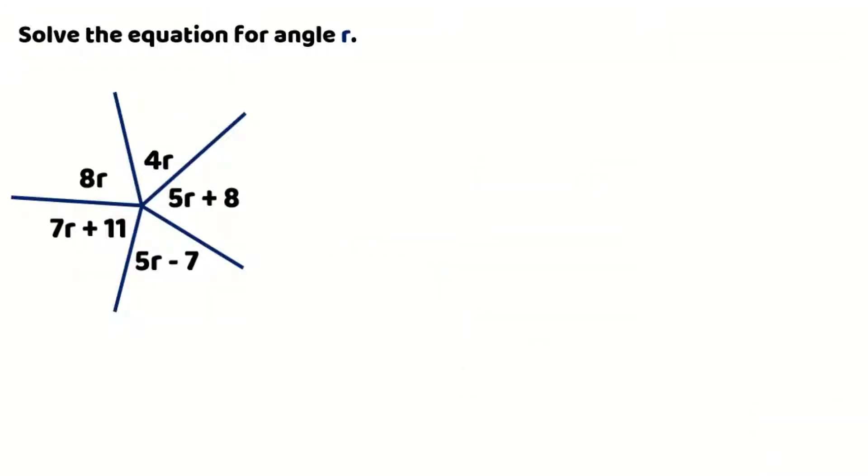We're going to begin solving our equation the way we did in our first example, remembering that all of the components in our diagram sum to 360 degrees. So we're going to begin by writing out our equation first, and then we'll move on to our next step where we're going to begin simplifying our equation.